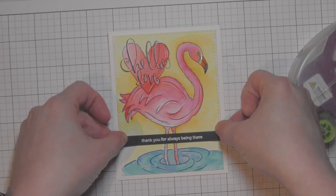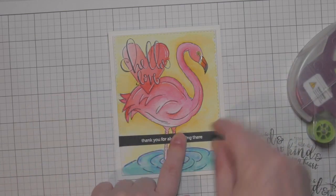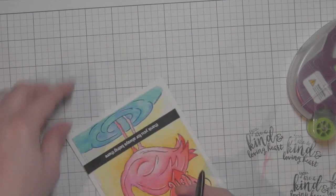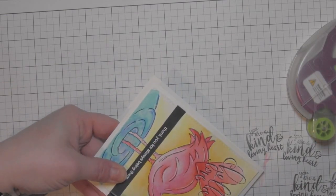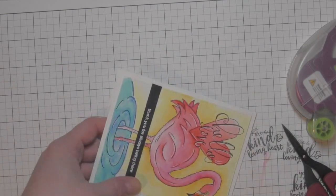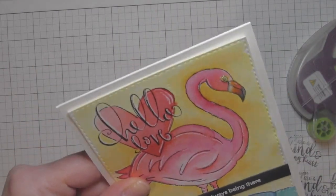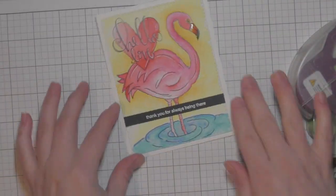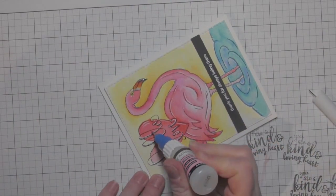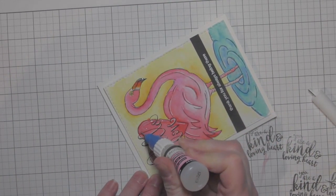It's a nice thin strip, so it's not going to cover up too much of the design. I'll just need to take my scissors and trim that down to the size of the panel. If I had been thinking about it before I attached it to the panel, I would have adhered it before I had attached that watercolor panel to my card base, but that's all right.